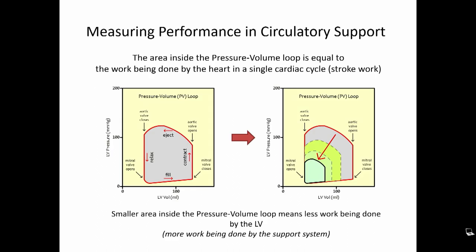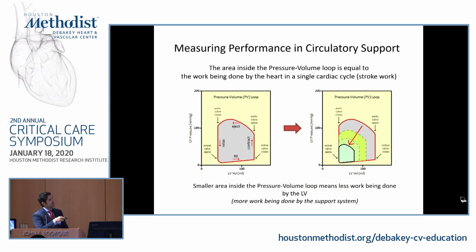I'll talk about pressure-volume loops. The work done by every single cardiac cycle is equal to the area under the pressure-volume loop. Here is the pressure, here is the volume — the mitral valve opens, the left ventricle fills with blood, the mitral valve closes, isovolemic contraction occurs, the aortic valve opens, blood gets ejected, and then the aortic valve closes.